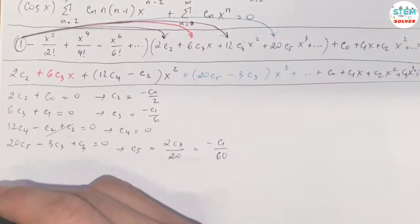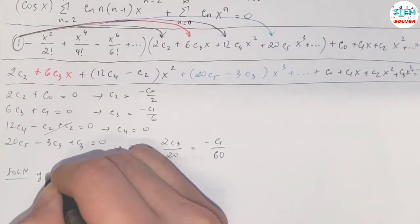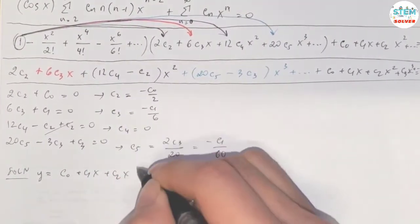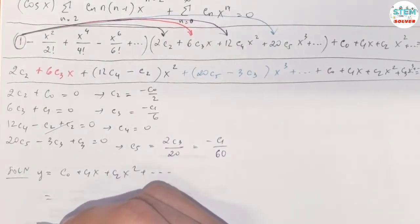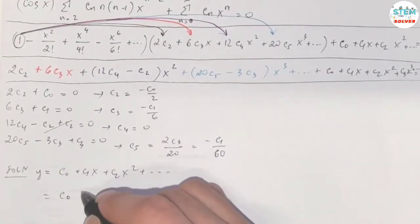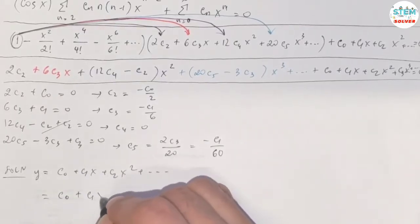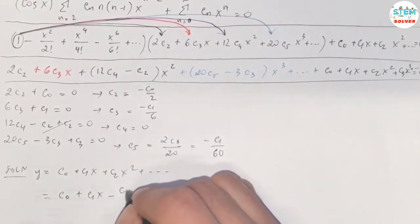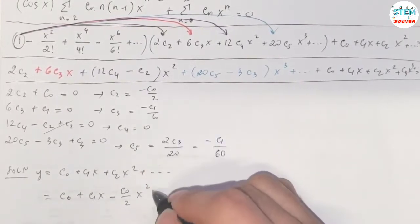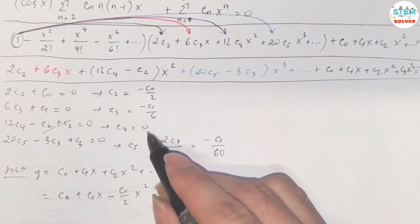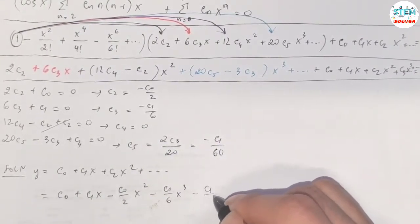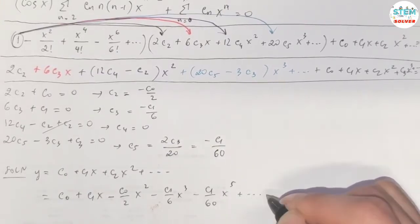Then my final solution is y equals c_0 plus c_1 x plus c_2 x squared plus dot dot. And c_0, I'll just rewrite it. C_1, I'll just rewrite it. What is c_2? C_2 is negative c_0 over 2. C_3 is negative c_1 over 6 x cubed. What is c_4? C_4 is 0. C_5 is negative c_1 over 60 x to the fifth plus dot dot.